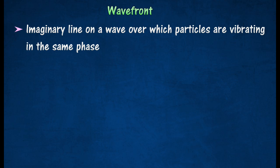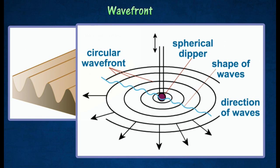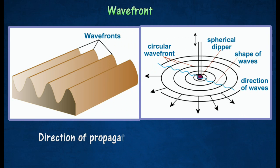Water waves can be produced easily and observed. The figure shows the plain and circular wavefronts. The direction of propagation of the waves is always perpendicular to the wavefronts as shown in the diagram.